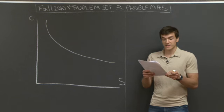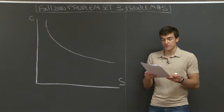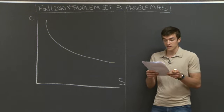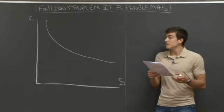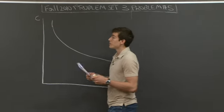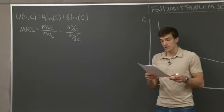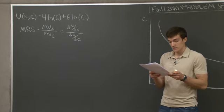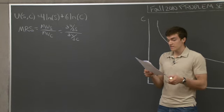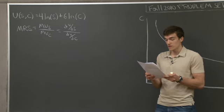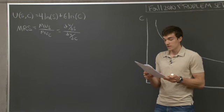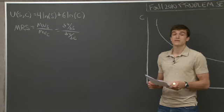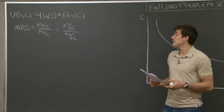Problem 5 says that Zhao spends all her income on statistical software and clothes. Her preferences can be represented by the utility function where her utility equals 4 times the natural log of S plus 6 times the natural log of C, where S is software and C is clothes. Part A asks us to compute the marginal rate of substitution of software for clothes, whether the MRS is increasing or decreasing in S, and how to interpret the MRS.